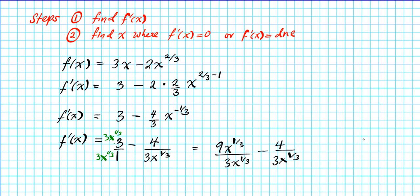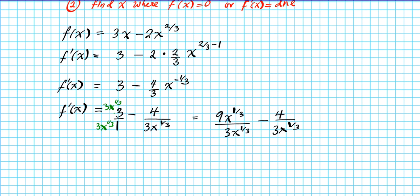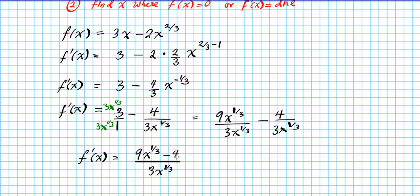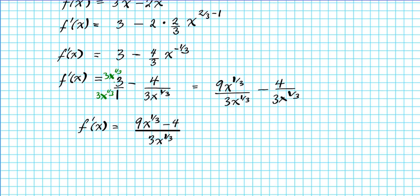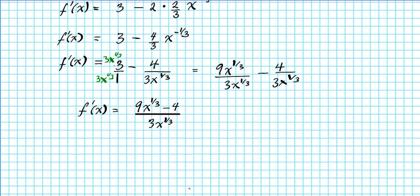Since the denominators are identical, we can combine the fractions: f'(x) = (9x^(1/3) minus 4) divided by 3x^(1/3). This format with a clear numerator and denominator makes it straightforward to find where the derivative equals 0 or does not exist.